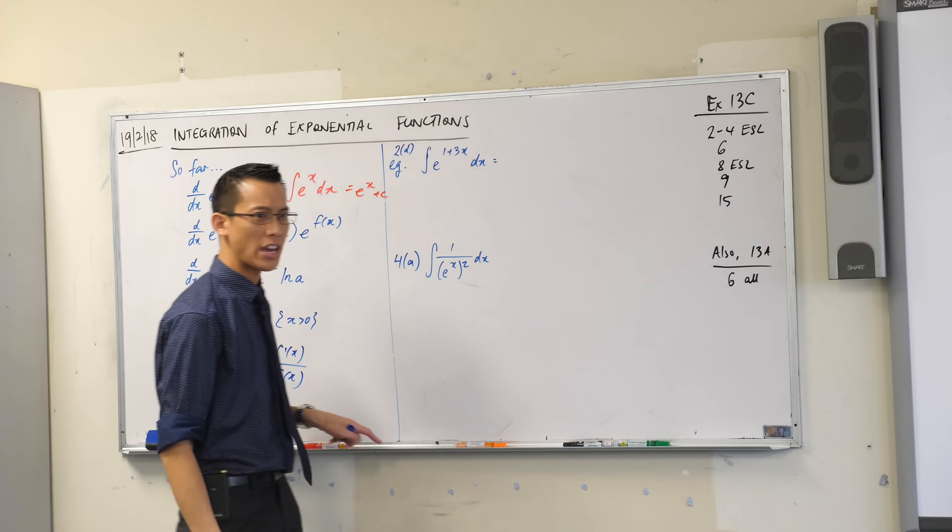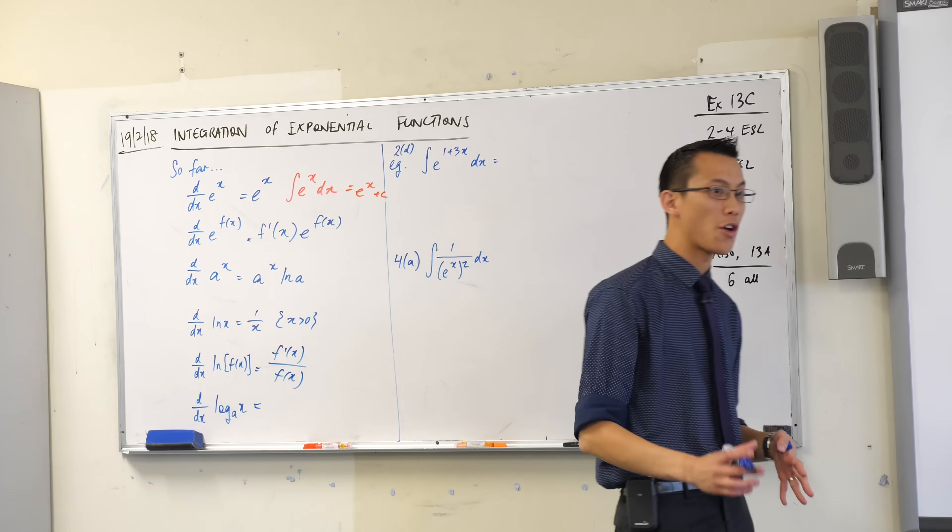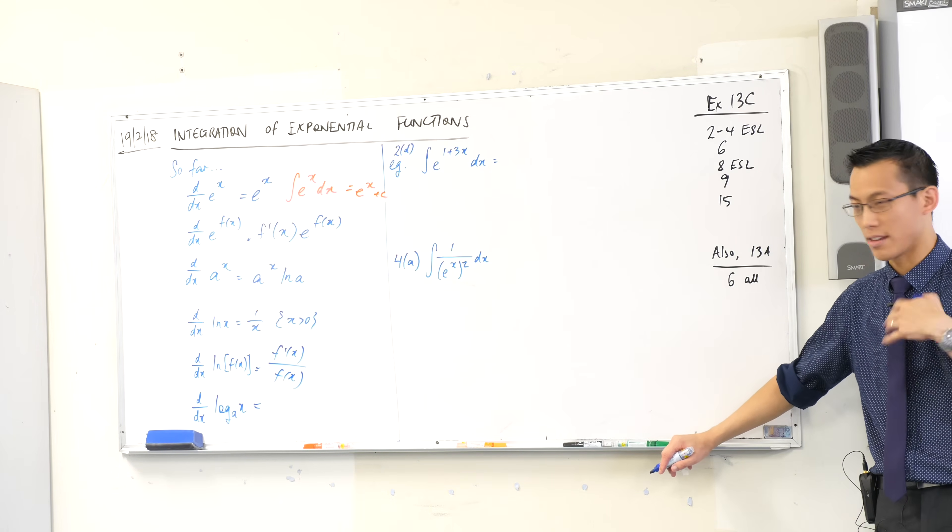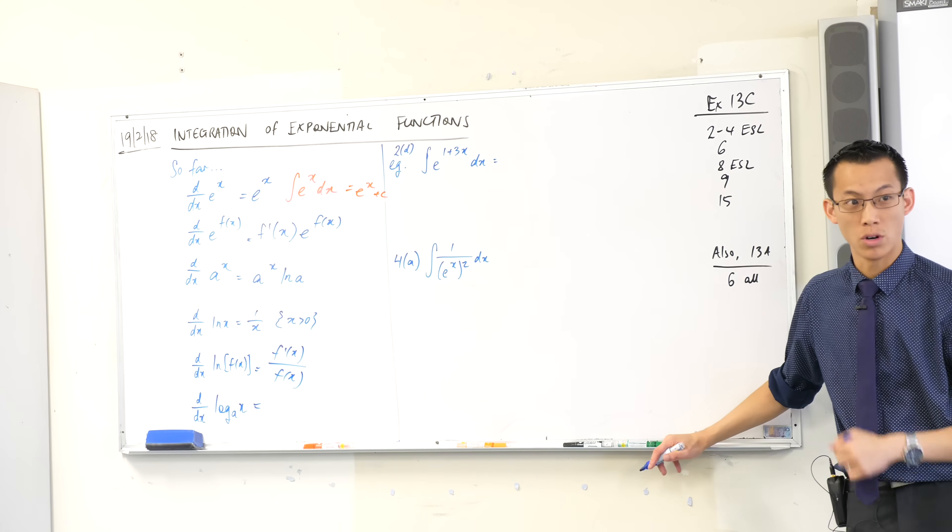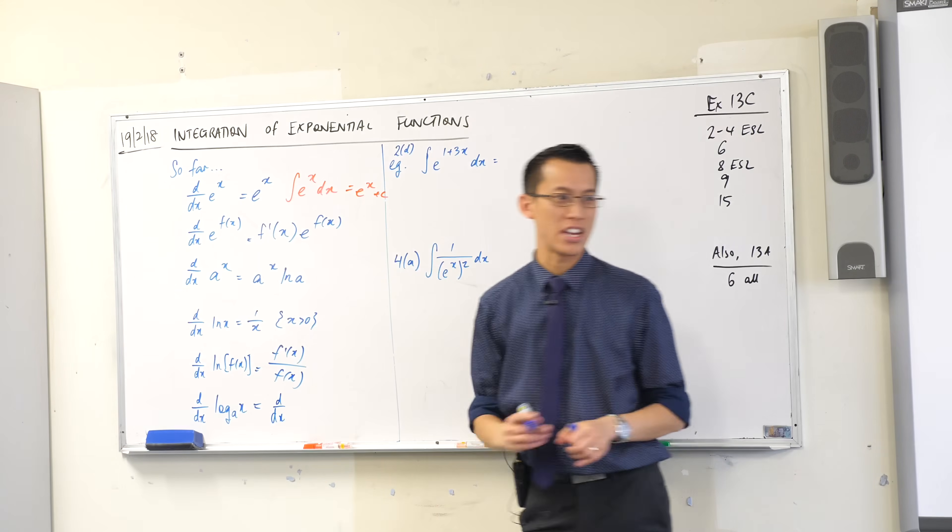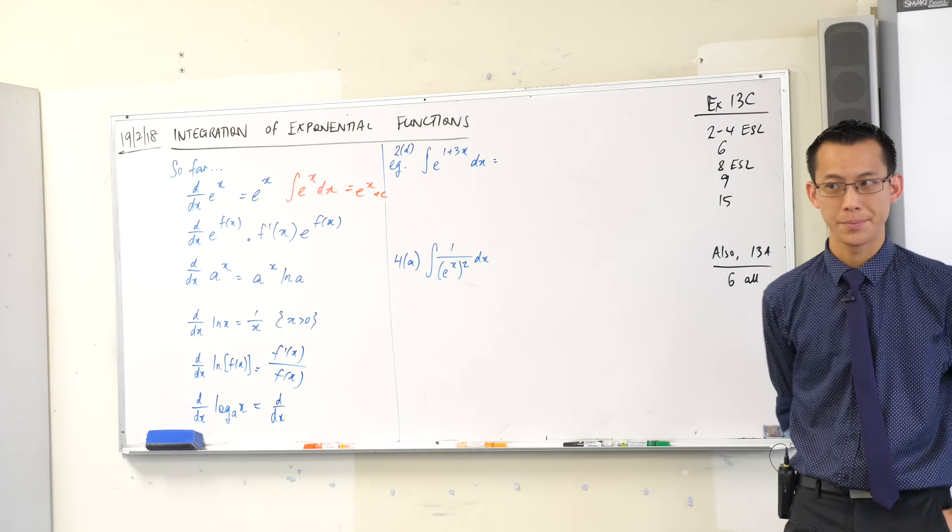Lastly, if you change the base, remember we needed to go back to our log laws to do this one. How would I rewrite this in order to make it workable in base e? What's just the, before I differentiate, what does the change of base rule tell me that I can rewrite this as? Log x.